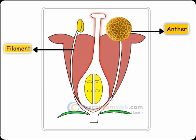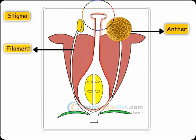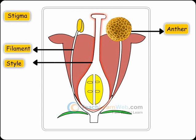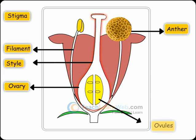Pistil, the female reproductive structure, is made up of a terminal stigma, middle elongated style and a basal ovary. Ovary consists of ovules, the female gametes.